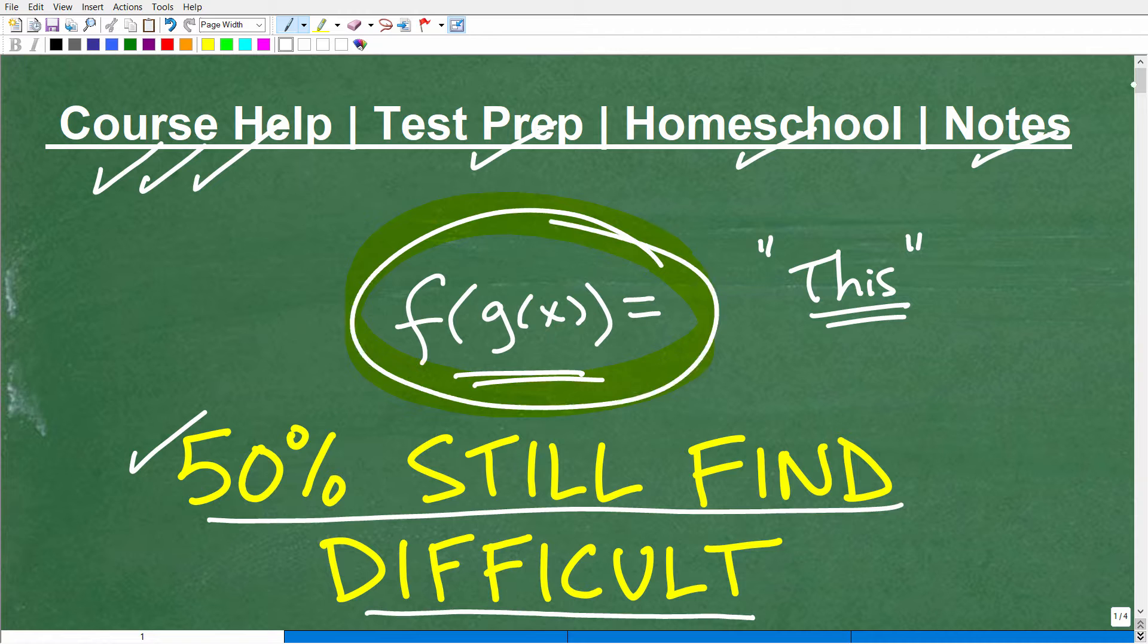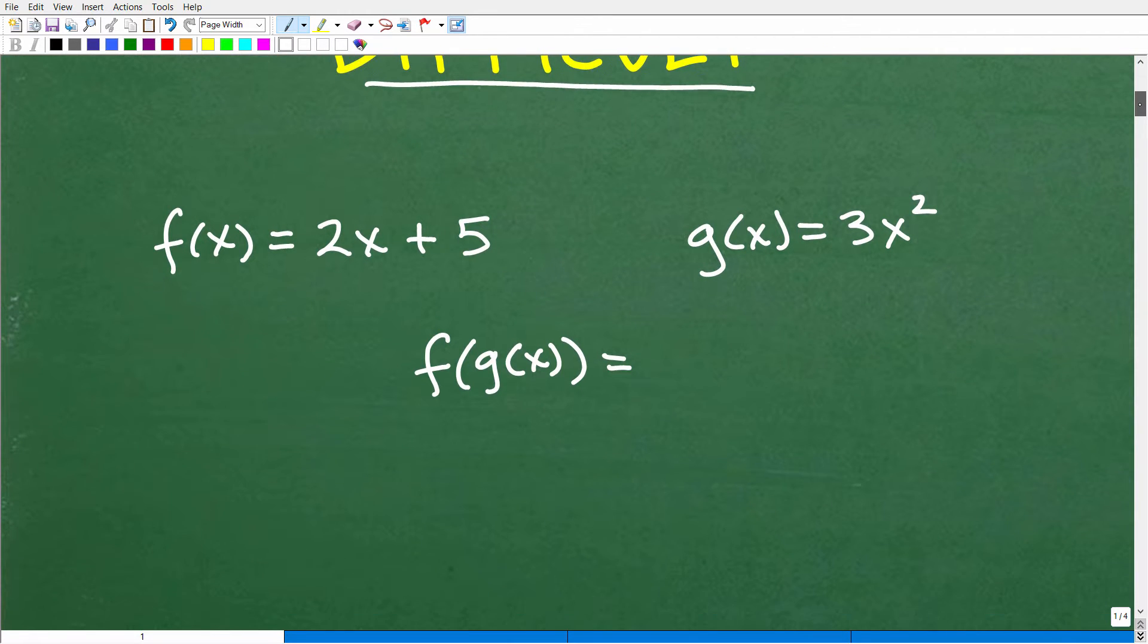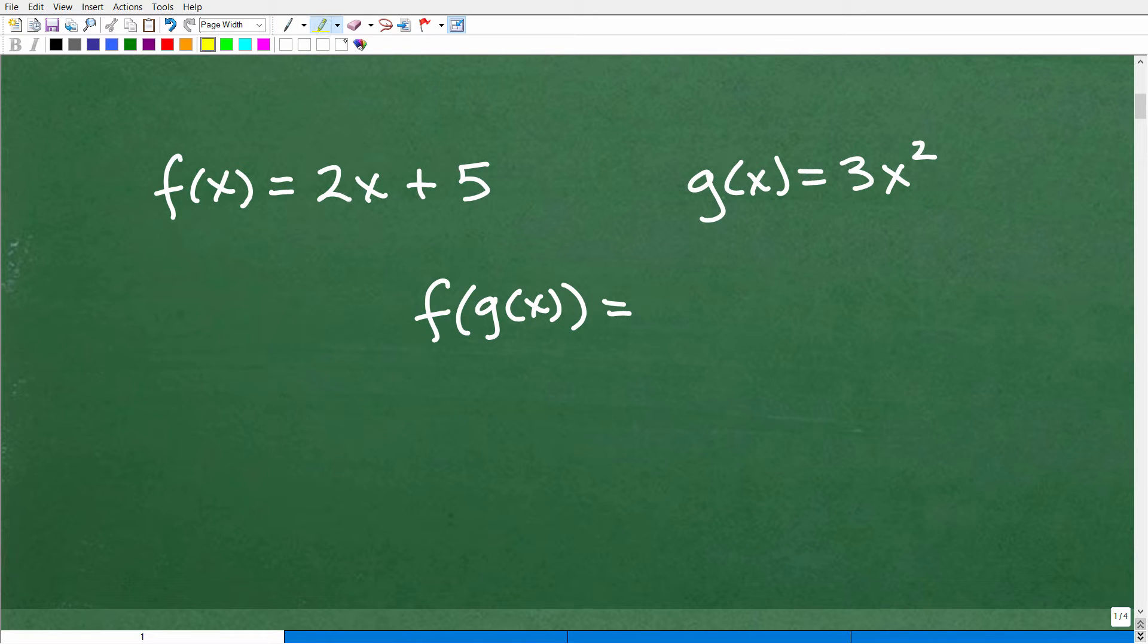Okay, so let's get into composite functions, and I'm going to give you an opportunity to kind of check to see how well you know this. It's a little pop quiz here. So we can't really find a composite function if we don't have the actual functions, right? So here, let's go ahead and give you a problem. Given that f(x) equals 2x plus 5, and g(x) equals 3x squared, I'd like you to go ahead and find f of g of x.